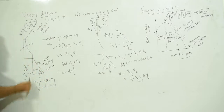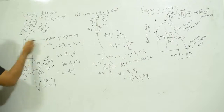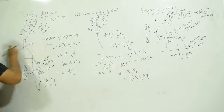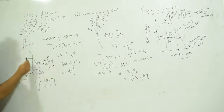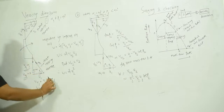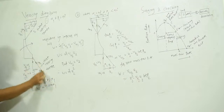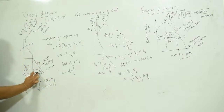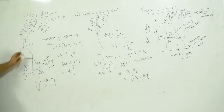Whenever there is axial entry, v1 equals vf1. The fluid direction is axial and the blade moves in the u1 direction. Since v1 is the resultant of u1 and vr1, we draw vr1 to complete the inlet triangle, where beta1 is the angle between vr1 and u1.